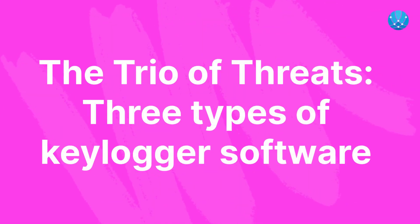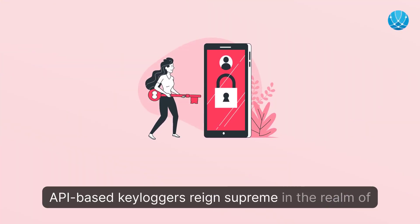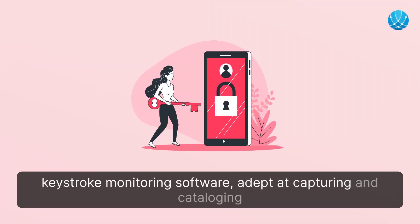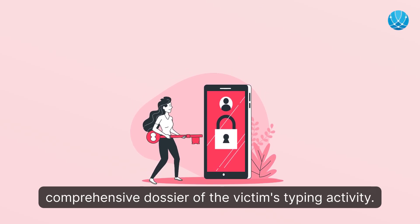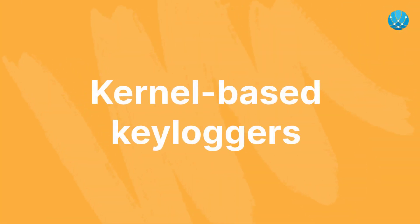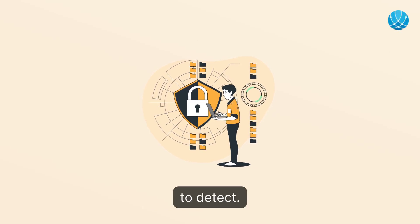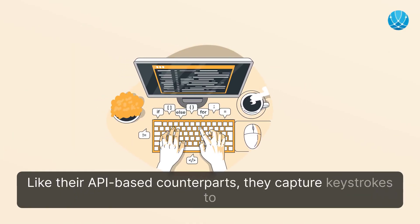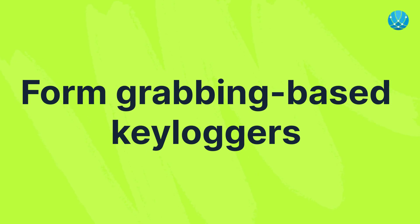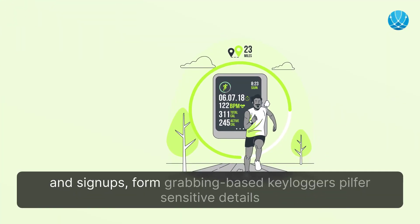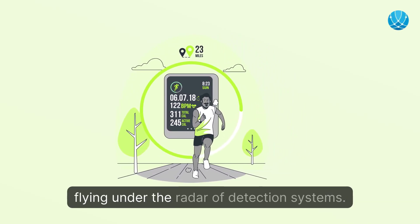The trio of threats: three types of keylogger software. API-based keyloggers reign supreme in the realm of keystroke monitoring software, adept at capturing and cataloging every key press, allowing threat actors to compile a comprehensive dossier of the victim's typing activity. Kernel-based keyloggers operate on a deeper level within a device's core, making them challenging to detect, capturing keystrokes to extract valuable information. Form-grabbing-based keyloggers seize data from online forms like logins and signups, pilfering sensitive personal and financial information, all while flying under the radar of detection systems.